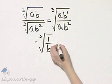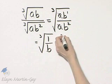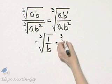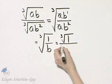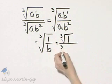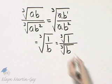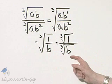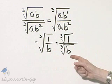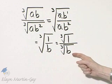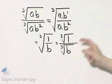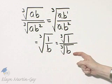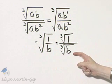Now let's go ahead and write this as the cube root of 1 — and we certainly know what that is — over the cube root of B. And now let's worry about rationalizing the denominator. What do I multiply the cube root of B by so that the radicand becomes a perfect cube?